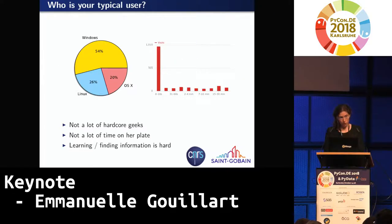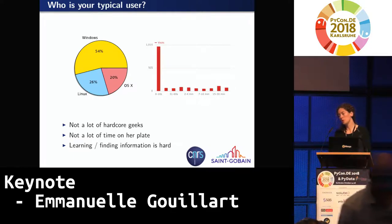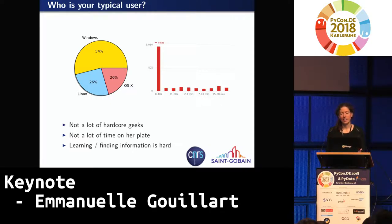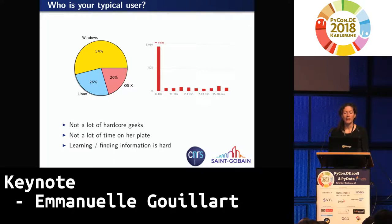To know how to solve problems for your users, it's good to get to know them. What I like to do is look at the visit statistics on the website. When you look at the statistics, you see that the typical time a user spends on the website is quite short — a few seconds. People don't have a lot of time. You have to provide them information as fast as possible. Also, more than half the users are on Windows, which is not representative of this room. It means you have to cater for people who are not hardcore geeks.